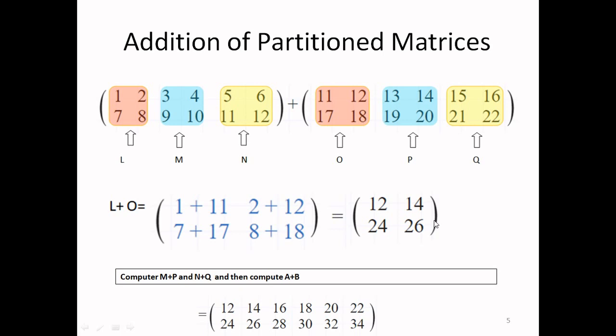Afterwards, when all three sub-matrix additions (L+O, M+P, N+Q) have been computed individually, I will join all of them. The answers computed individually are now combined into a composite answer — this part shows L+O, this part shows M+P, and this part shows N+Q.